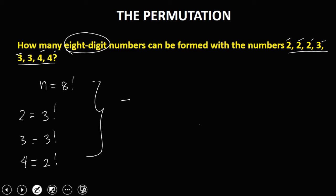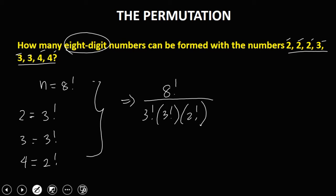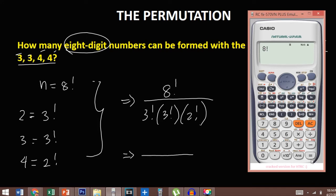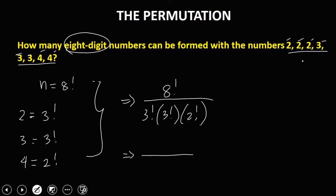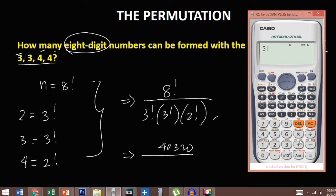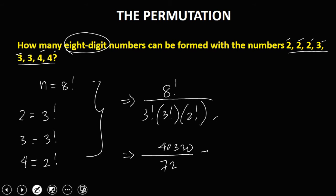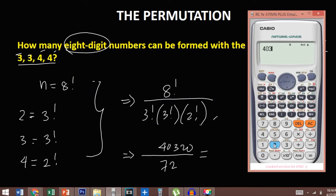To solve for this problem, we have 8 factorial over 3 factorial times 3 factorial times 2 factorial. To simplify, 8 factorial is 40,320. And 3 factorial times 3 factorial times 2 factorial equals 72. So we have 40,320 divided by 72, which equals 560.